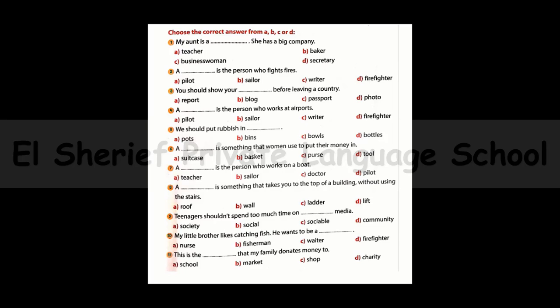Number three: You should show your ___ before leaving a country. The answer is: passport. Number four: A ___ is a person who works at the airport. The answer is: a pilot. Number five: We should put rubbish in ___. The options are: bins, balls, or bottles. The answer is: bins.